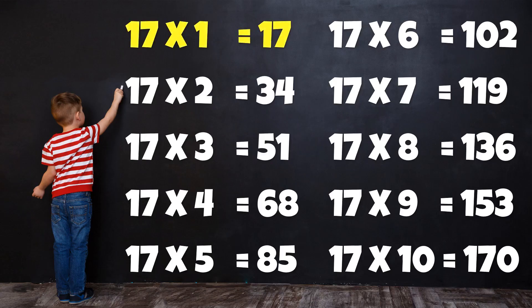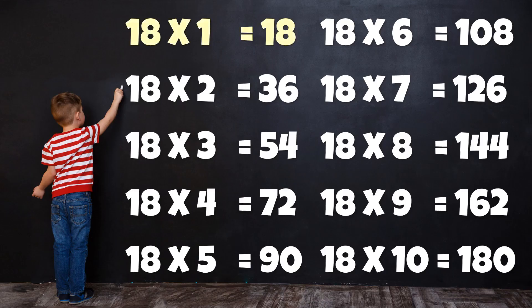Table of 17. 17 1's are 17. 17 2's are 34. 17 3's are 51. 17 4's are 68. 17 5's are 85. 17 6's are 102. 17 7's are 119. 17 8's are 136. 17 9's are 153. 17 10's are 170.